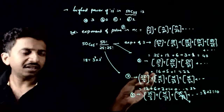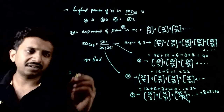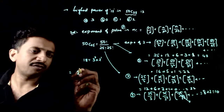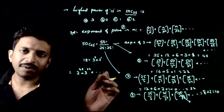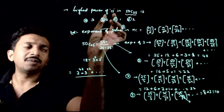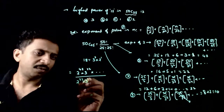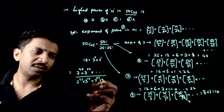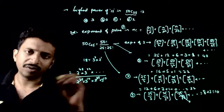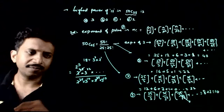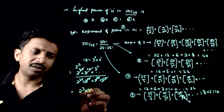So in each factorial we have found the powers of 2 and 3. For 50C25 = 50! / (25! × 25!): exponent of 2 = 47 − 22 − 22 = 3, and exponent of 3 = 22 − 10 − 10 = 2. So effectively 50C25 contains 2³ × 3².